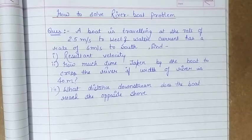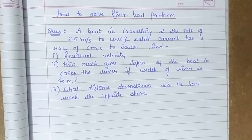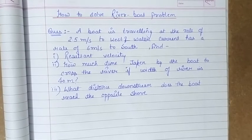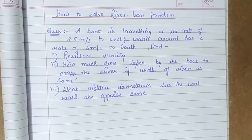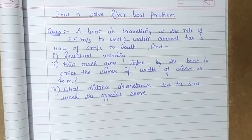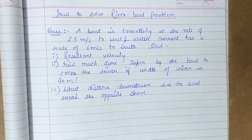Second, we have to find the time taken by the boat to cross the river — when it goes from one shore to another — given the width of the river is 40 meters. The last thing is the distance downstream the boat travels while crossing, to find the position on the other shore. So these three things we have to find.